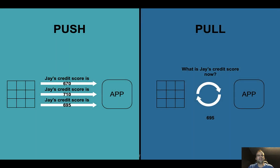On one side you push data and continuously stream it. On the other side, you still want to do analytics and query data — for example, from a mobile app when you want to know your bank balance, or from a company perspective to get a customer's credit score before giving a credit or loan. This is where you pull queries from the streaming data. That's also possible with event streaming.